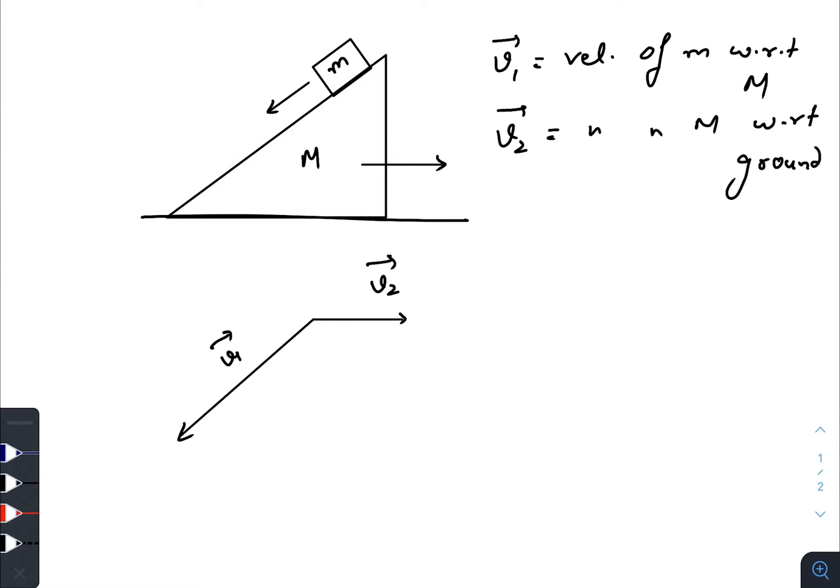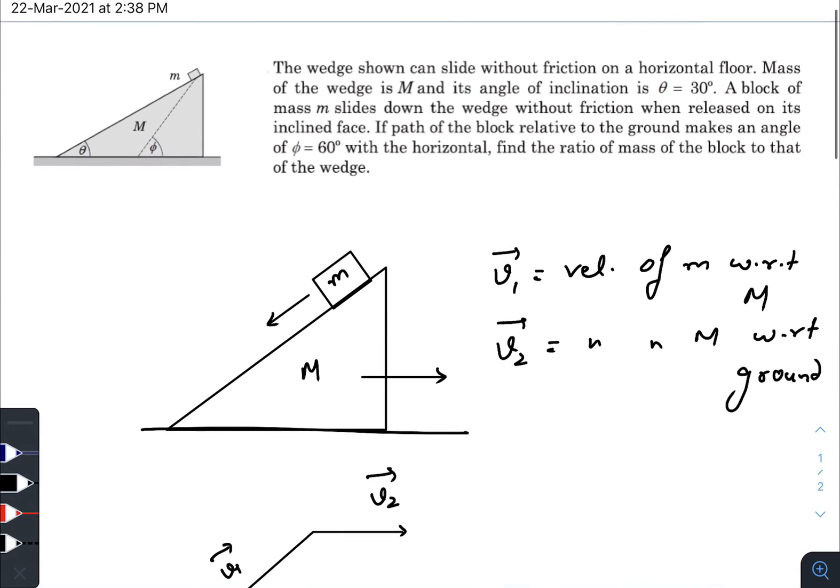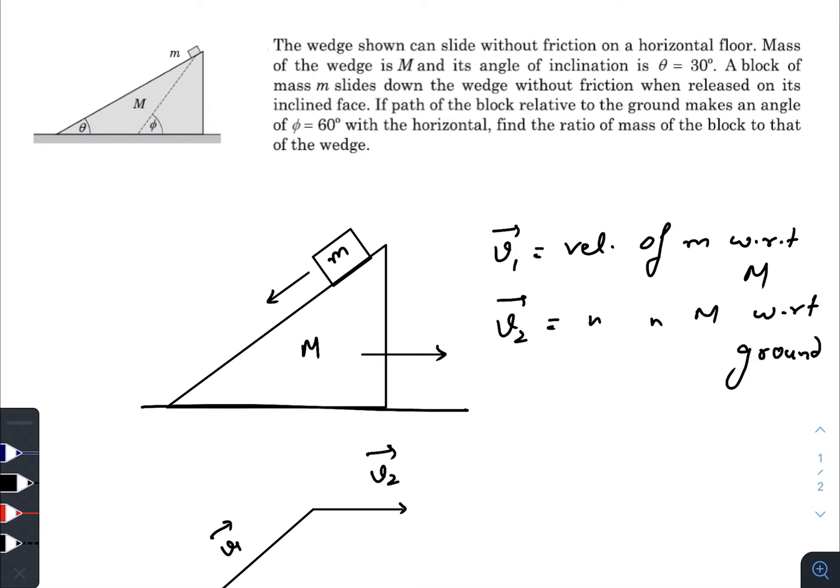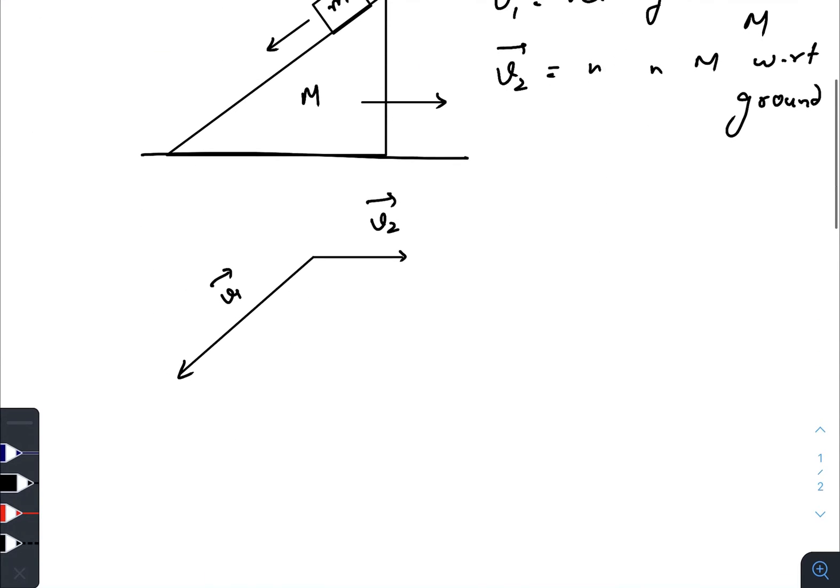As I have said earlier, you cannot predict the velocity of small m while standing on the ground, so you need to change your reference frame. We will go to the velocity of this block with respect to the ground indirectly using vector addition. Now as it is said in the question that the path of the block relative to the ground makes an angle phi, which is 60 degrees with the horizontal.